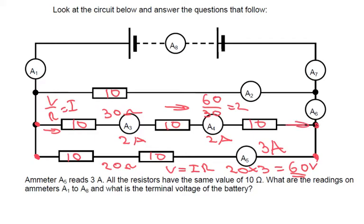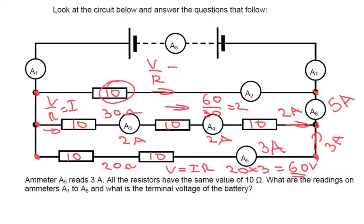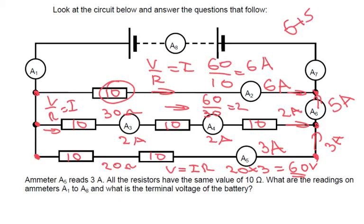Coming out of here we've got 2 amps, and coming up here we've got 3 amps. Therefore A6 is going to be 2 amps plus 3 amps, which equals 5 amps. We still know between these two points we've got 60 volts, so we want to find the current going through the remaining branch. With voltage divided by resistance equal to current, 60 divided by 10 equals 6 amps. So we've got a current of 6 amps here, and with 5 going in here, we're going to have 6 plus 5, which gives us 11 amps.